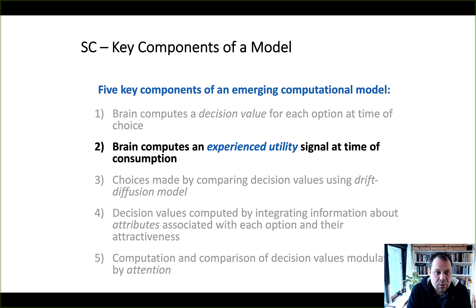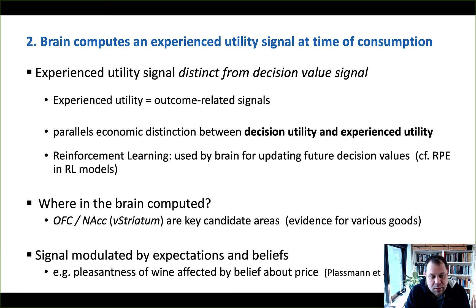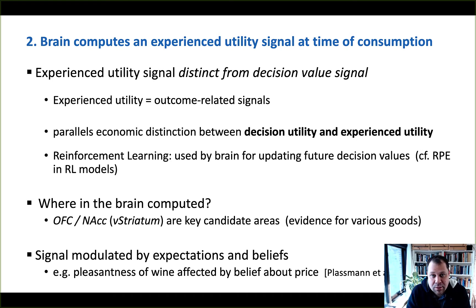We'll move on to the second component of our model, namely that the brain computes an experienced utility signal at the time of consumption. The first thing to point out is that experienced utility is different from decision value, the aspect we've talked about in the previous video. Experienced utility is basically an outcome-related signal that we have encountered before when we discussed reinforcement learning.